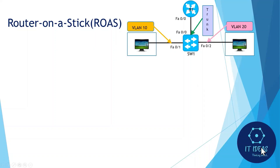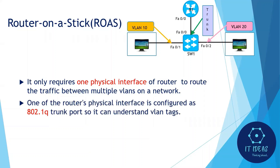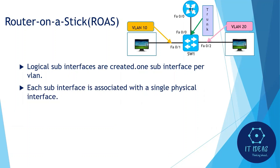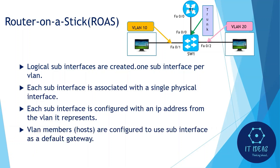The next method is router-on-a-stick. This method uses a router to route traffic between VLANs, and overcomes the limitation of legacy inter-VLAN routing. Unlike the legacy method, it only requires one physical interface of the router to route traffic between multiple VLANs. The router's Ethernet interface is configured as an 802.1Q interface so it can understand VLAN tags, and it is connected to a trunk port on a layer 2 switch. Logical sub-interfaces are created — one sub-interface per VLAN — each configured with an IP address from the VLAN it represents. VLAN members are configured to use the sub-interface as their default gateway.